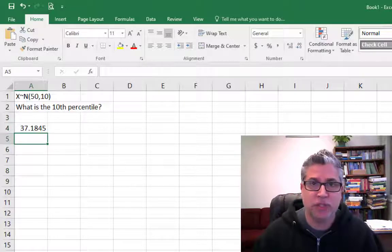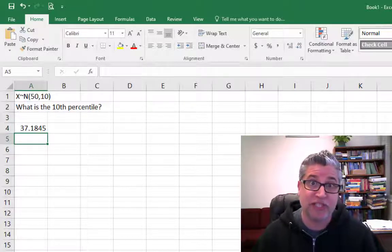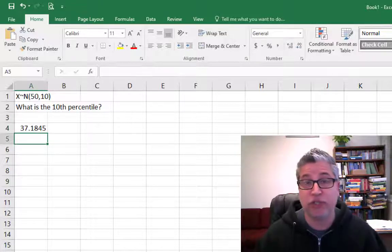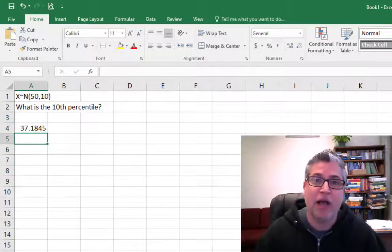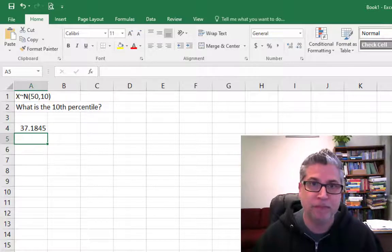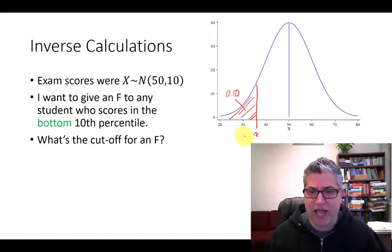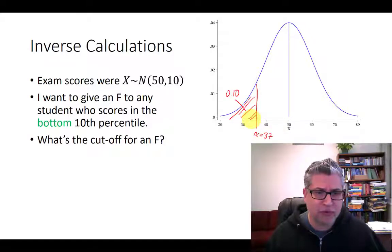And you get 37.18. So in other words, only those students that scored a 37 or less on my exam should get the F. So going back to my earlier drawing, it looks like I guessed pretty accurately. The particular test value was actually right around 37, between 30 and 40. Now that's for the students that did really poorly and got an F.